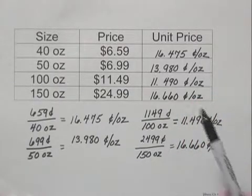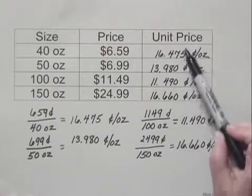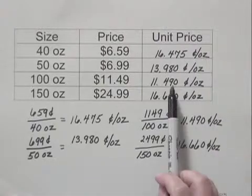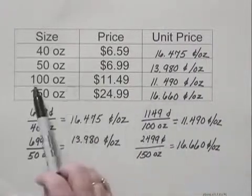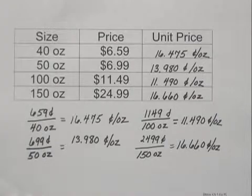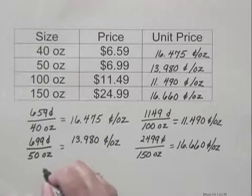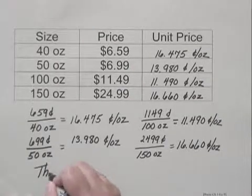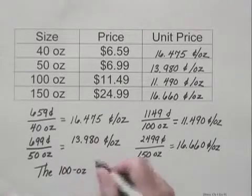Now when we have this finished, all we have to do is compare the unit prices in the table, and we see that it is not the largest container, but in fact the 100 ounce container that has the lowest unit price.